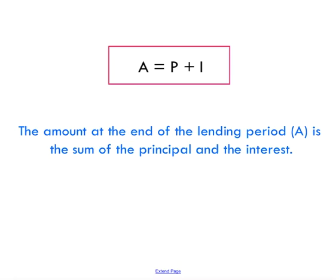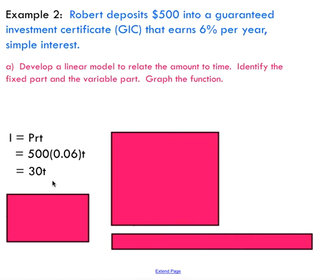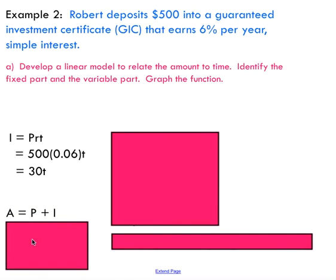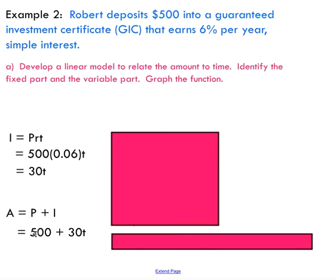Now, thinking back to the amount formula: amount equals your principal plus your interest. We have both of those pieces of information — with time remaining as the variable — and our goal is to relate amount to time. Substituting our interest expression of 30T into A = P + I, and knowing our initial principal and interest rate over time, we get a linear function where the fixed portion is the y-intercept and the variable portion is the slope.